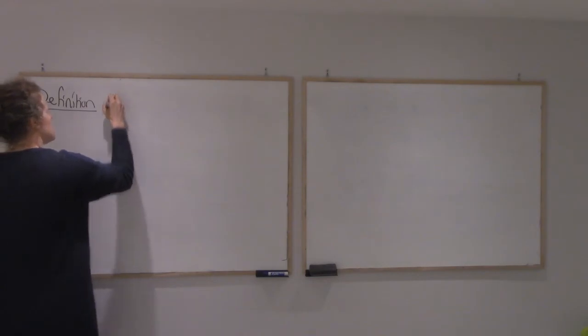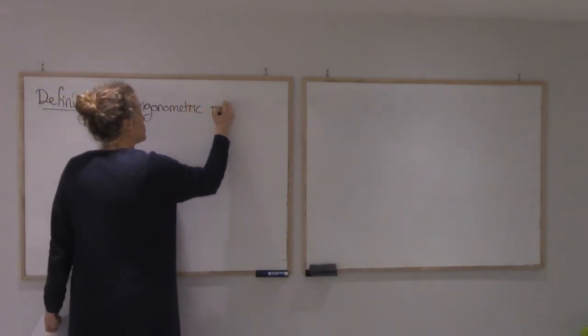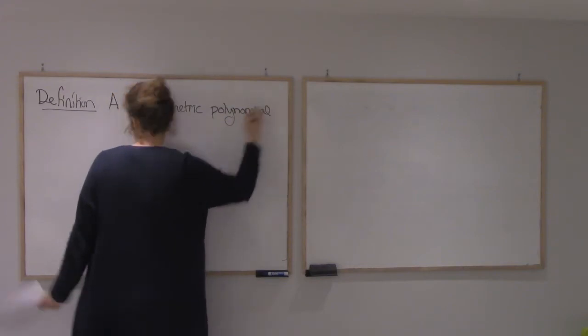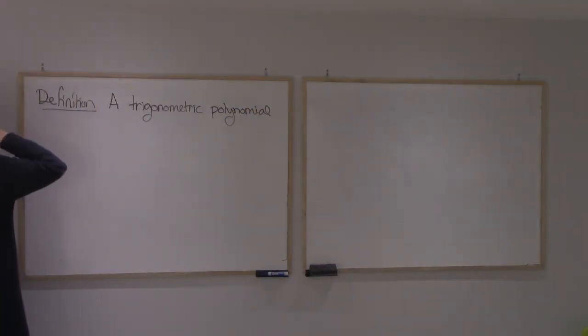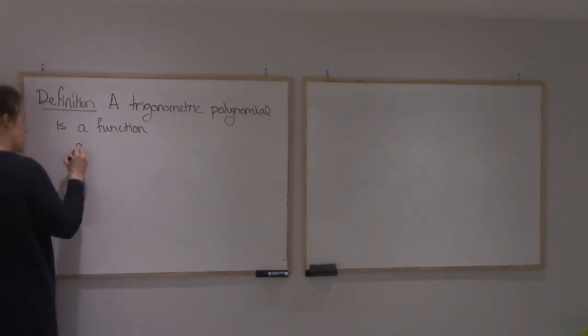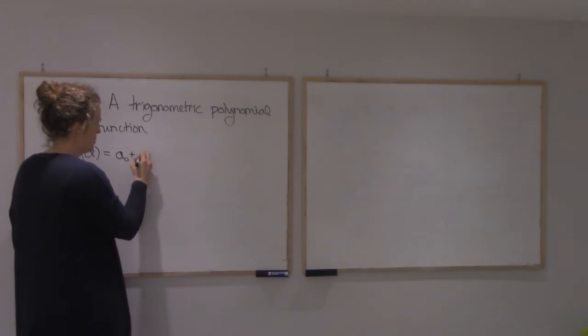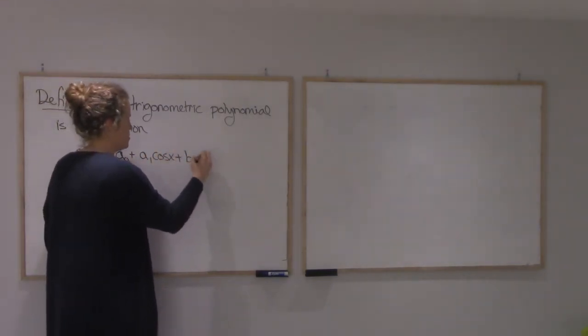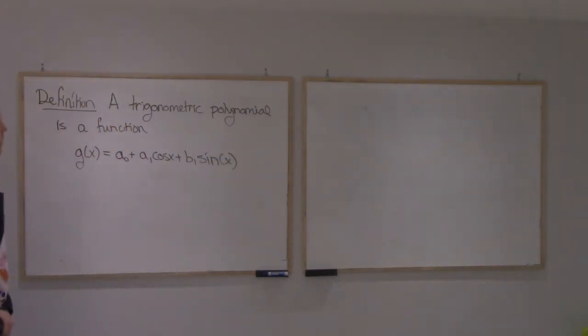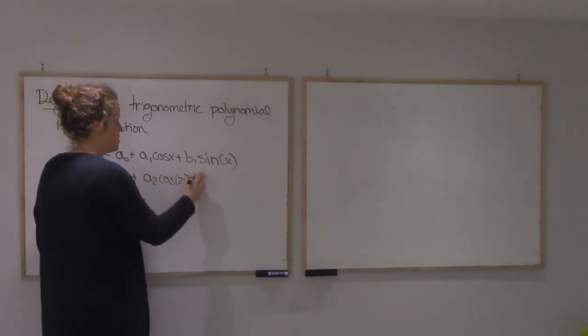A trigonometric polynomial, let's call it G. We're going to have a constant, and then we're going to use cosine and sine, then cosine 2x and sine 2x, and so on.